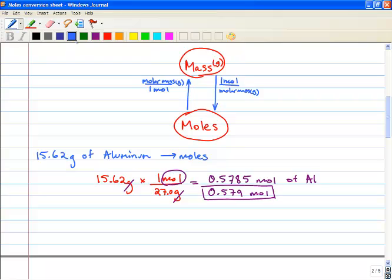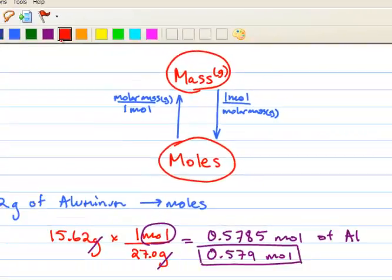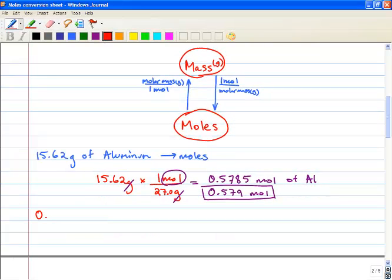Now, what we're going to do is we're going to go from moles to mass. So imagine we have 0.245 moles of zinc, and we want to get it into mass. We want to find out how many grams that actually is.